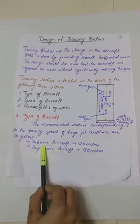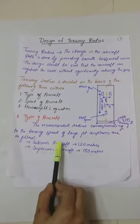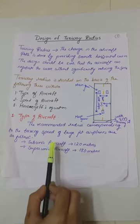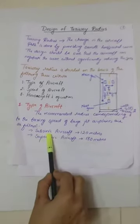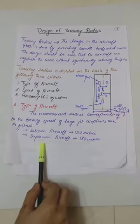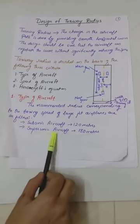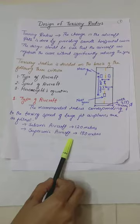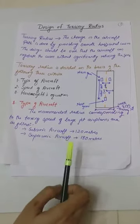What is a subsonic aircraft? When the speed of the aircraft is less than the speed of sound — like it is for most commercial aircrafts — those are the subsonic aircraft. And when the speed of the aircraft is more than the speed of sound, those are the supersonic aircraft. So this criteria is supposed to be remembered.